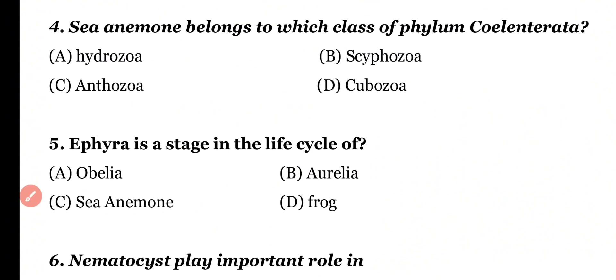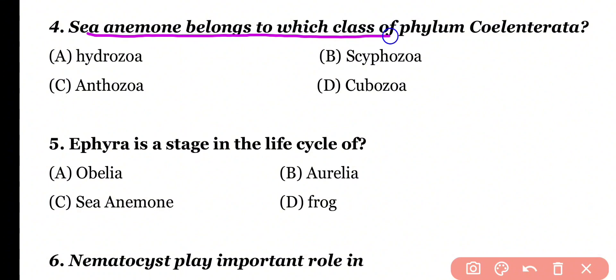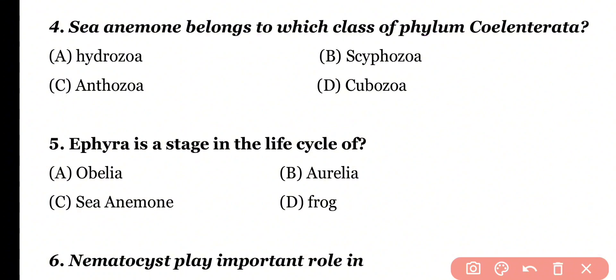Question number 4: Sea Anemone belongs to which class of Phylum Coelenterata? Hydrozoa, Scyphozoa, Anthozoa, or Cubozoa. Correct answer is option C. Sea Anemone belongs to class Anthozoa.